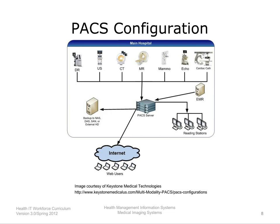According to Ralston and Coleman, 2010, a picture archiving and communication system stores, distributes, and displays medical images for interpretation or review. As explained by Bachu, 2005, a PACS data network is a computer network system designed to transfer, store, and retrieve digital medical images for viewing at the right place and at the right time. It integrates data from systems inside and outside healthcare departments, and ensures that images and image-related data are made available as needed at the point of care.